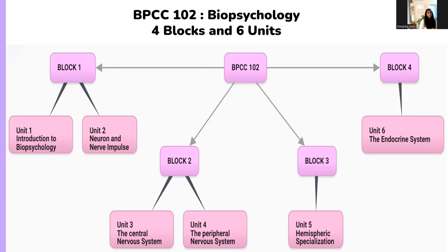Block one is more of an introductory lesson, concerned with introduction to biopsychology. In unit one we learn about the basics and introduction to biopsychology, and in unit two you will be introduced to neurons and nerve impulses. When we come to block two, we talk about the nervous system — specifically the central nervous system and the peripheral nervous system.